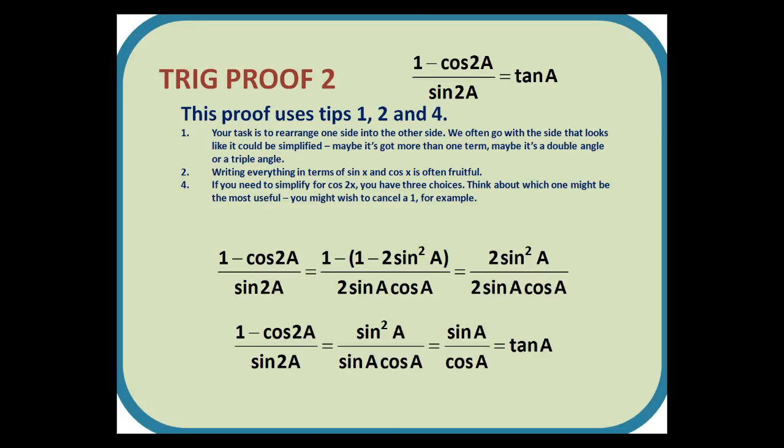Trig proof 2. (1 - cos 2a)/sin 2a = tan a. In this instance, we need to replace the cos 2a and sin 2a using the double angle formulae. Sin 2a only has one option, which is 2sin a cos a. But for cos 2a, as mentioned in the tips, we want to cancel the 1. So we use 1 - 2sin²a, and that leaves us on top with 2sin²a. The 2's cancel out. So do the sin a's, or at least one of them. And that leaves us with sin a/cos a, which of course is tan a, as requested.